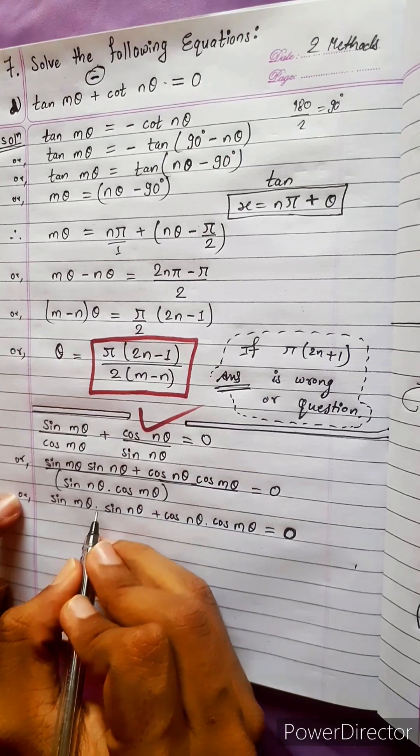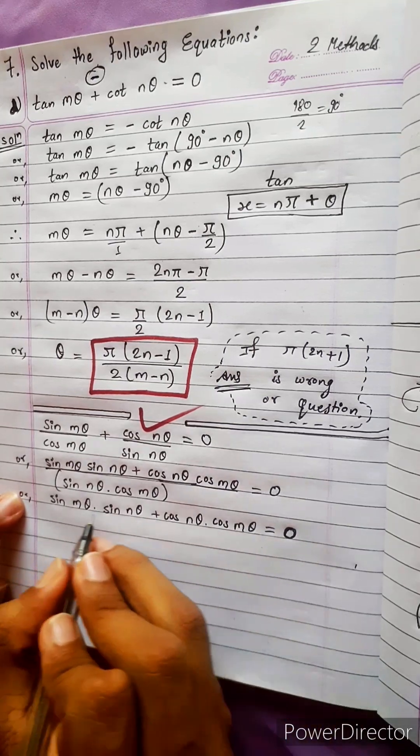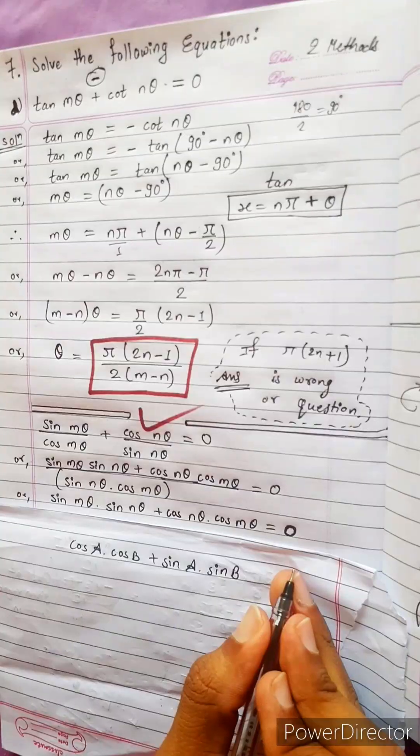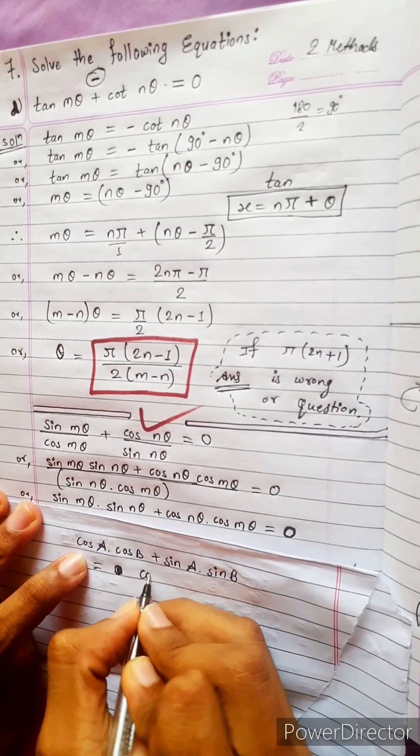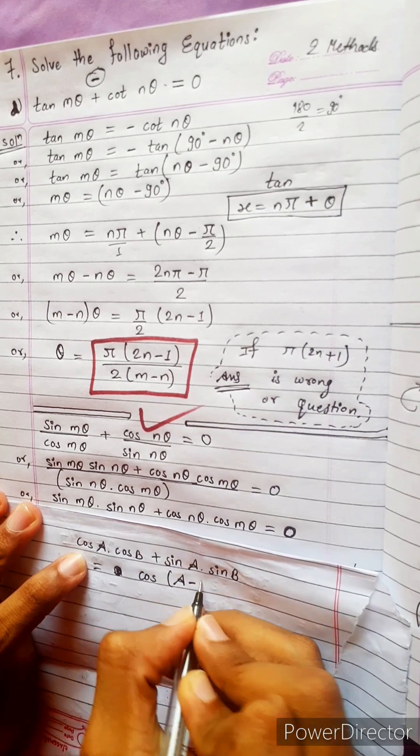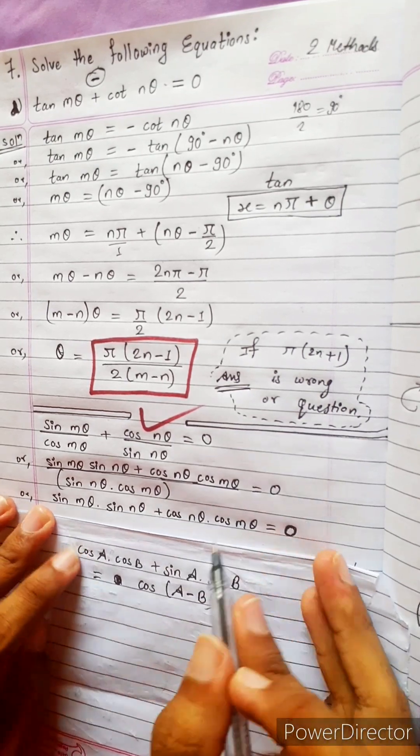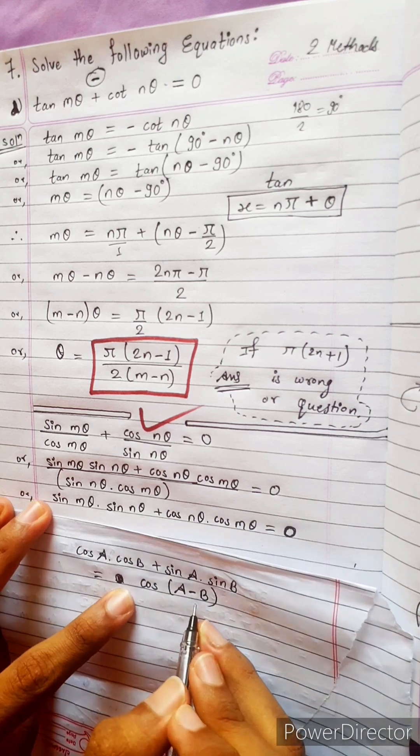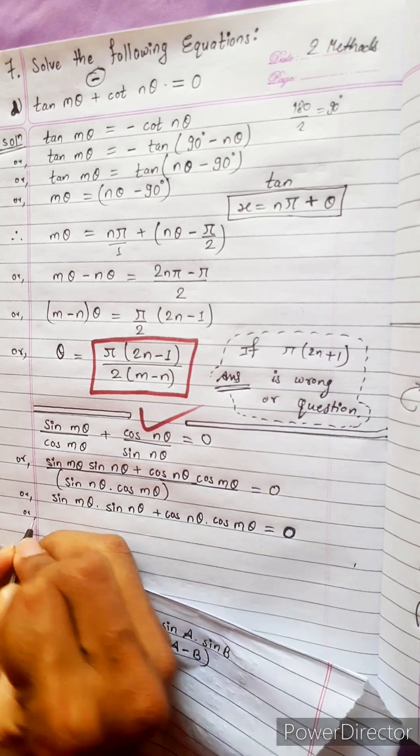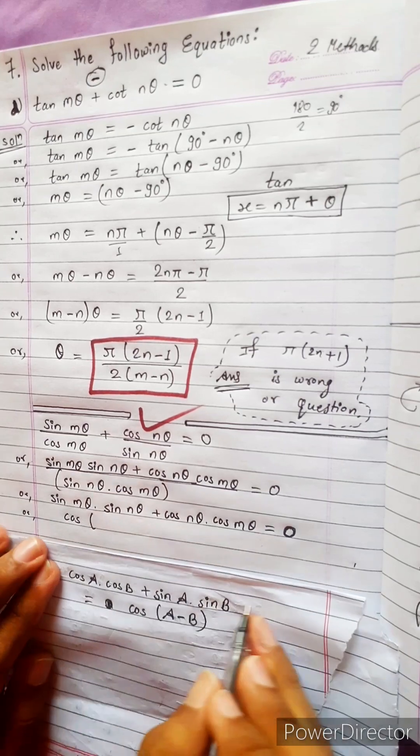After that do you remember one formula cos a cos b plus sine a sine b. Cos a cos b plus sine a sine b - this will be cos a minus b. Now look cos a plus b is this side and sine a plus b is another side but same thing formula is cos a minus b.